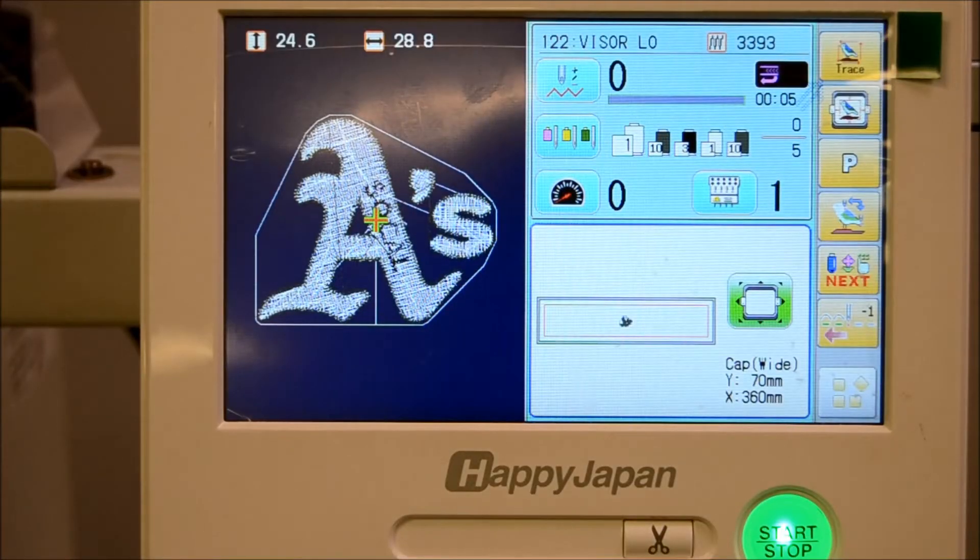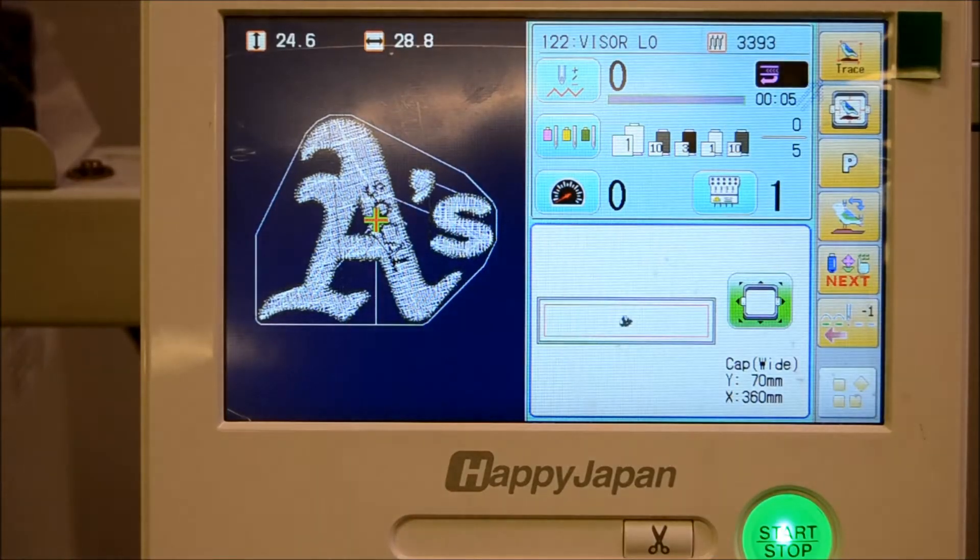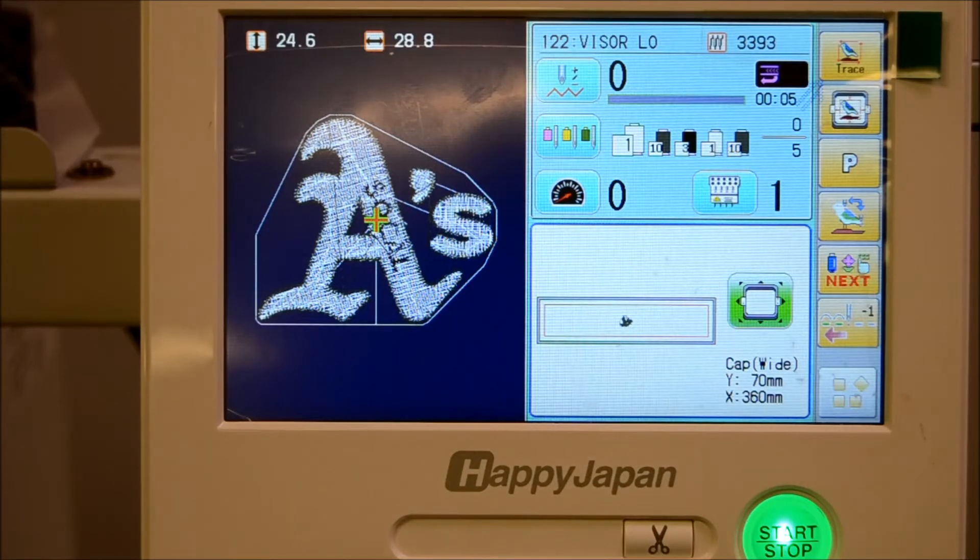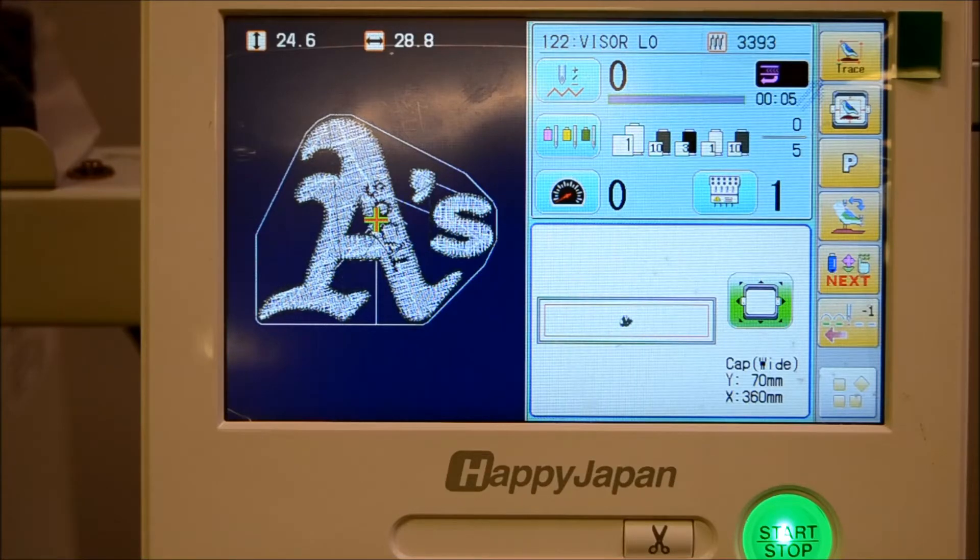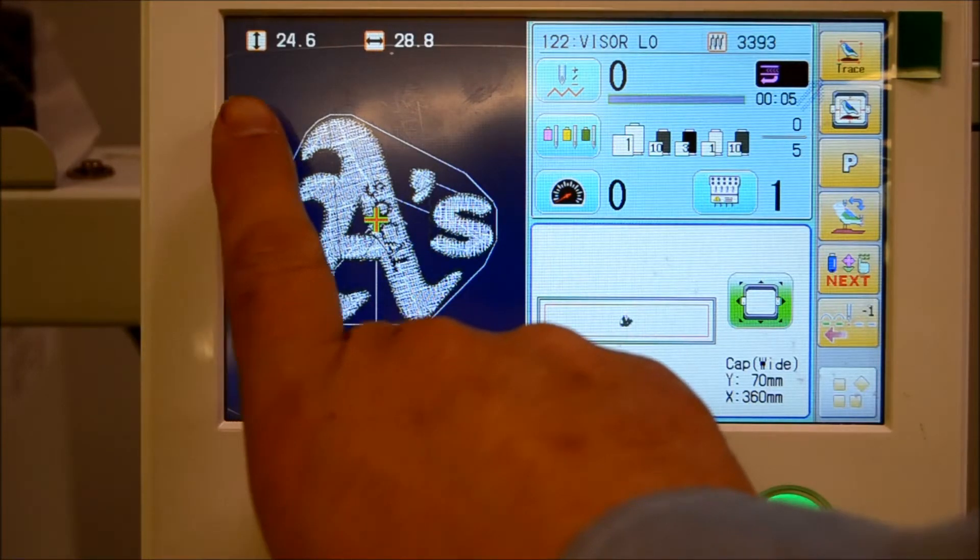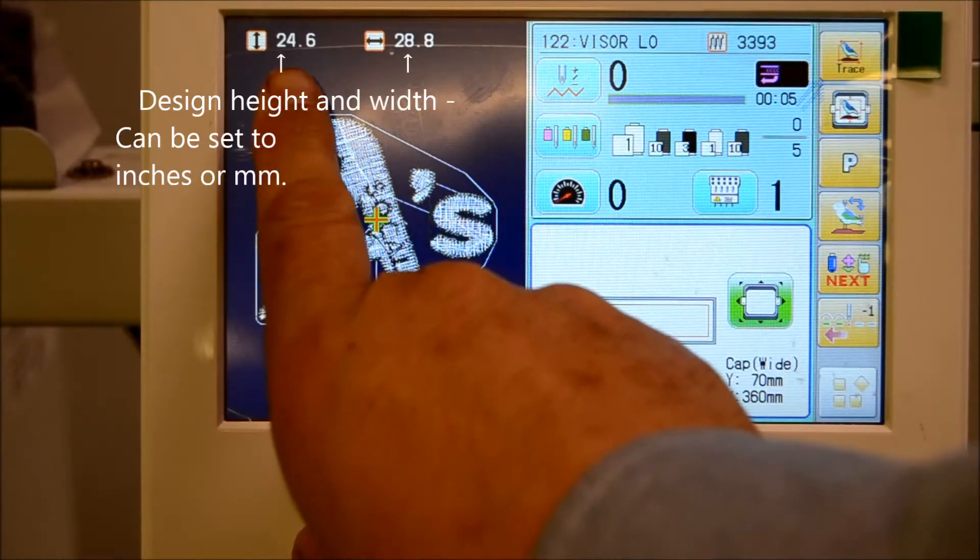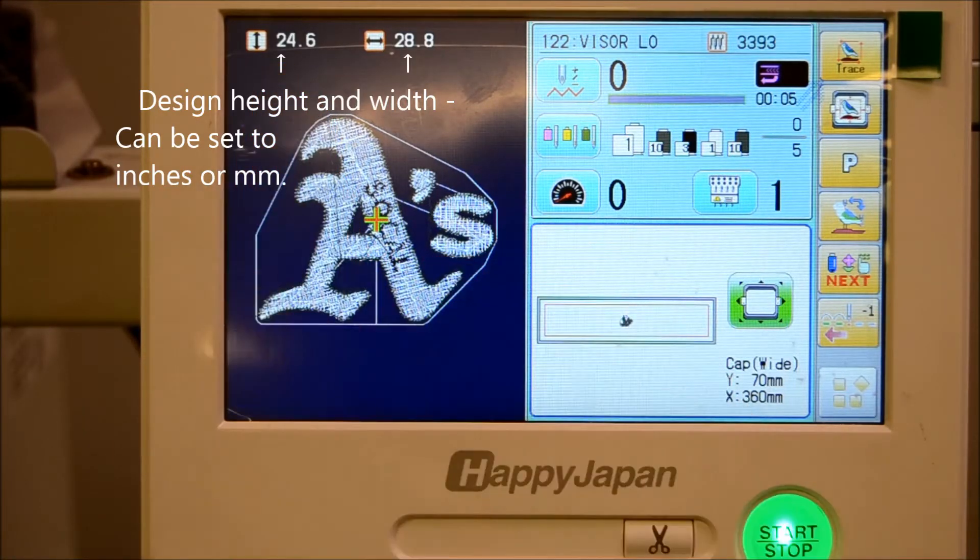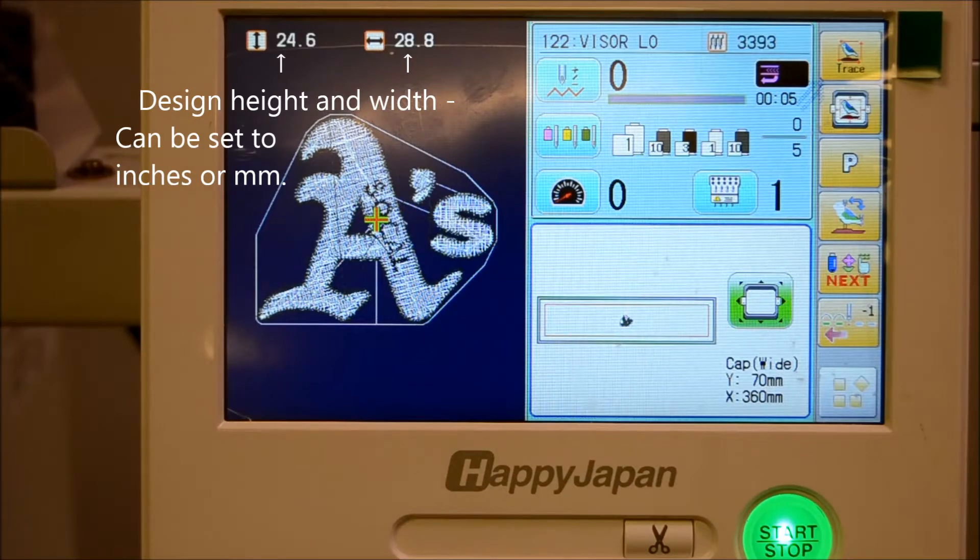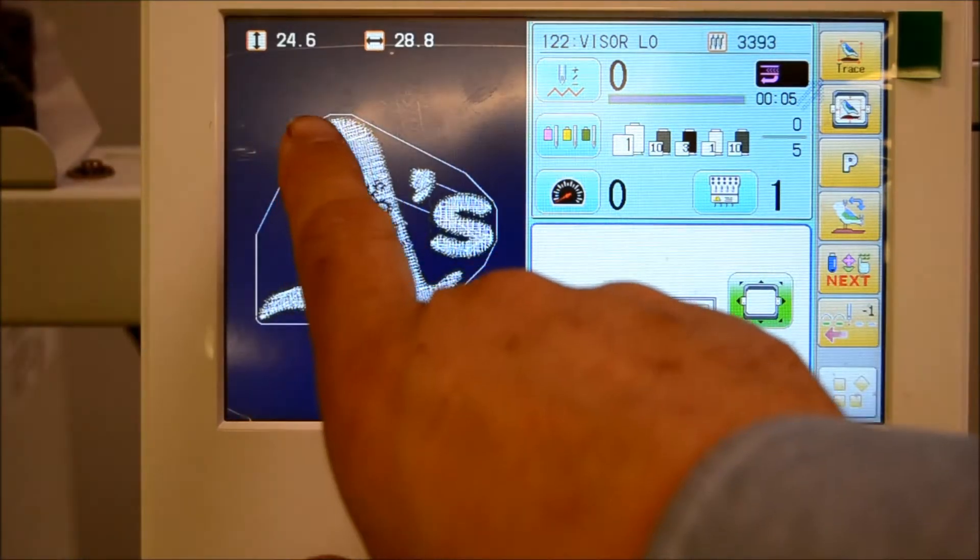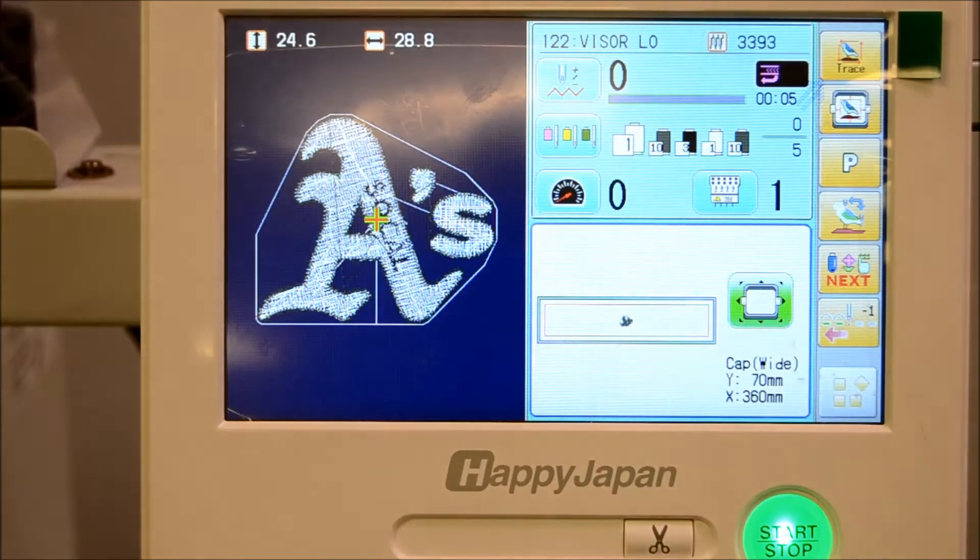Here we have our design that will be sewing on the visor. Make sure that it fits within the sewing field of your visor which is going to measure the height of the visor which is obviously a little bit more limited than a traditional cap. Look at the height of your visor or your design that you're going to sew. This says 24.6 with the machine set in millimeters and it's about 25.4 millimeters to the inch so that's just shy of one inch tall.